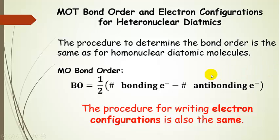Okay, so the procedure to determine the bond order is the same as for homonuclear diatomic molecules. So the same equation applies. So you'll recognize this from our homonuclear discussion.